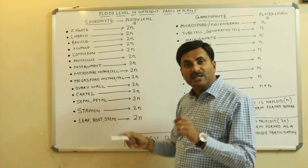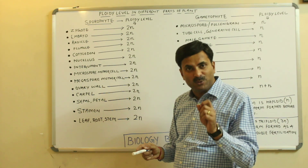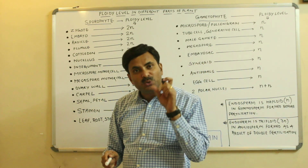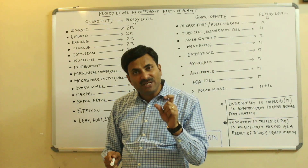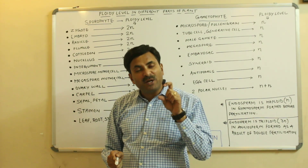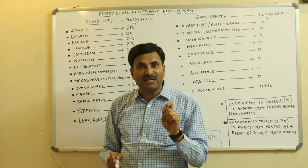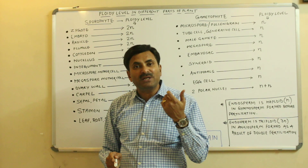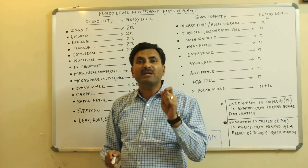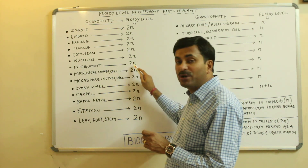Integuments are the protective coverings found around the ovule. If an ovule has two protective coverings, it is called bitegmic, and if there is one integument it is called unitegmic. Whether an ovule is unitegmic or bitegmic, integuments are always having the ploidy level of 2N.